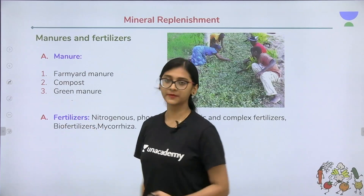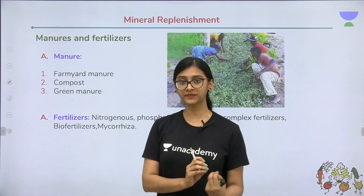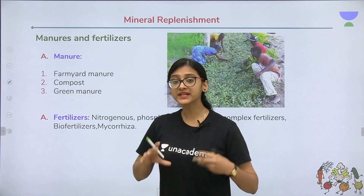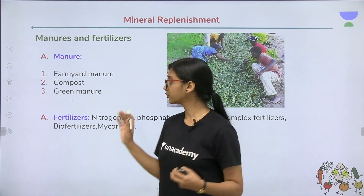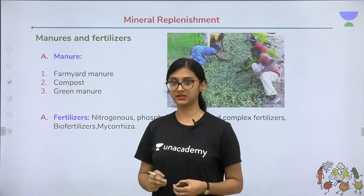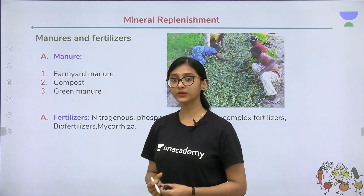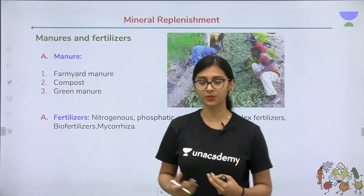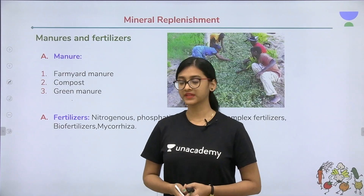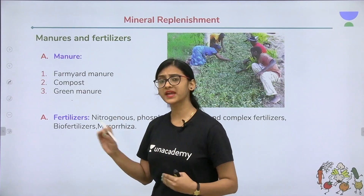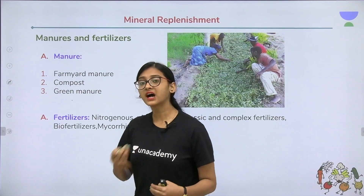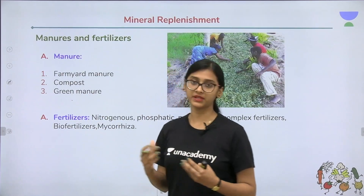Compost is made from waste of different animals like cattle, horse, or poultry, and also human excreta can be used. Vegetable waste can also be used for making compost. A very good example of compost is vermicompost, which is made by earthworms. Different techniques are used to make compost and it takes some months, but it produces higher nutrients compared to farm yard manure.